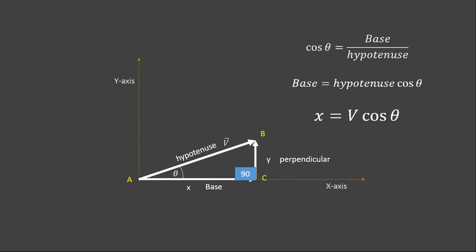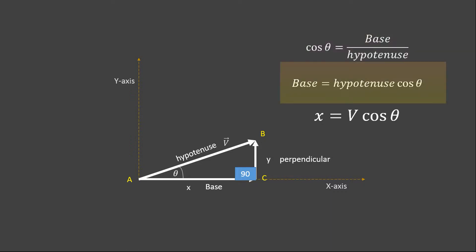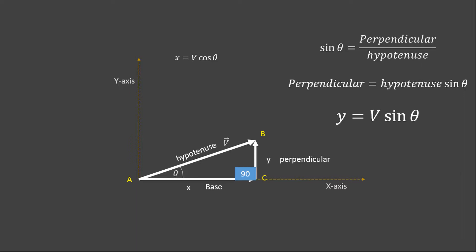According to trigonometry, we know that cos theta is equal to base divided by hypotenuse. Solving this, we have base equal to hypotenuse times cos theta. The hypotenuse is the magnitude of vector V, and theta is the angle of vector V with the x-axis, so we have x equal to V cos theta. This x is the x-component of vector V.